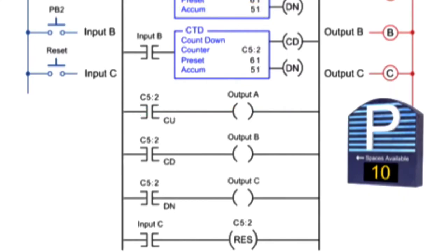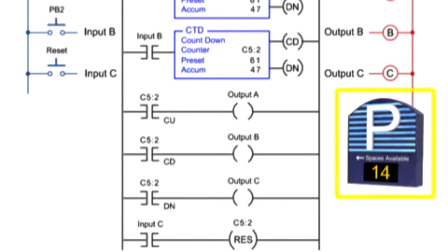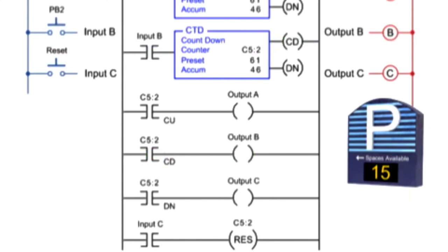Cars exit the garage by pressing PB2 to open the gate. The CTD instruction is decremented by one and the visual display is updated. With both the up and down counters addressed to the same counter file, the preset and accumulated values are the same.